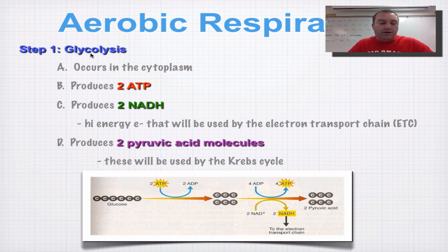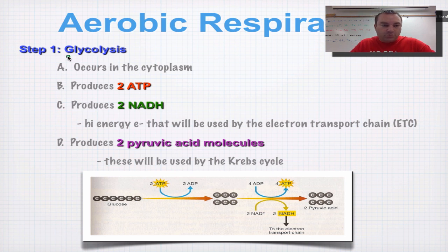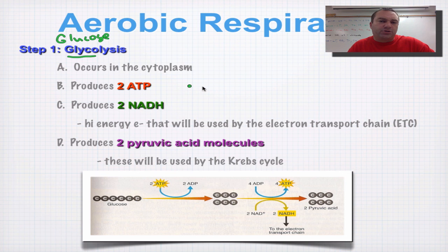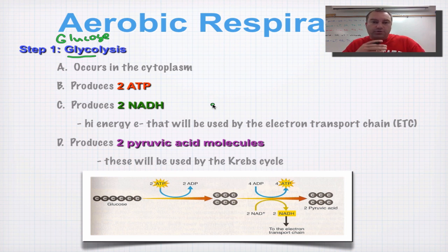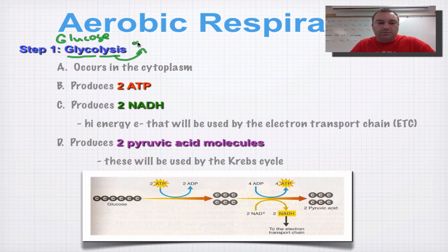First, I want to tell you what glycolysis means in plain English. The word 'glyco' refers to glucose. You may remember from chapter two where we talked about glycogen, which is animal starch — glycogen is made out of just a long chain of glucose molecules. So we're going to refer to 'glyco' as glucose. And we've learned before that 'lysis' means to break. So basically, glycolysis means breaking glucose in half.